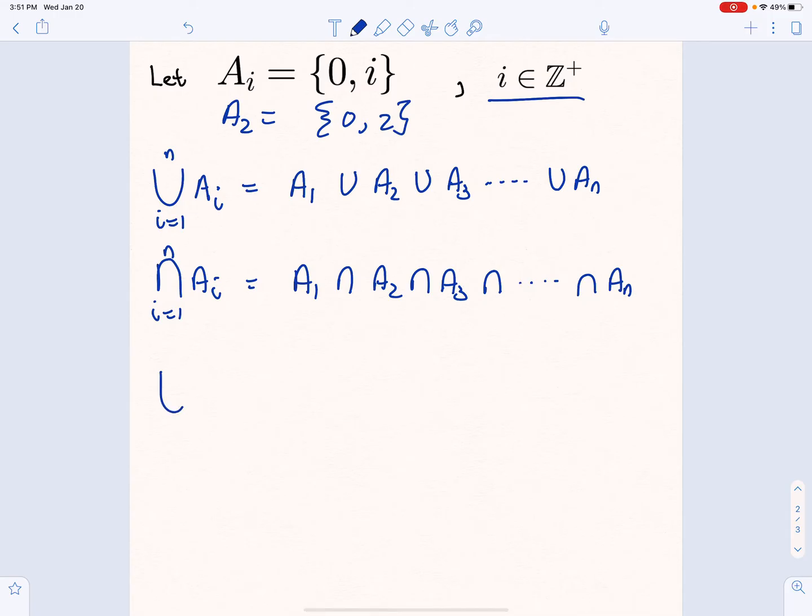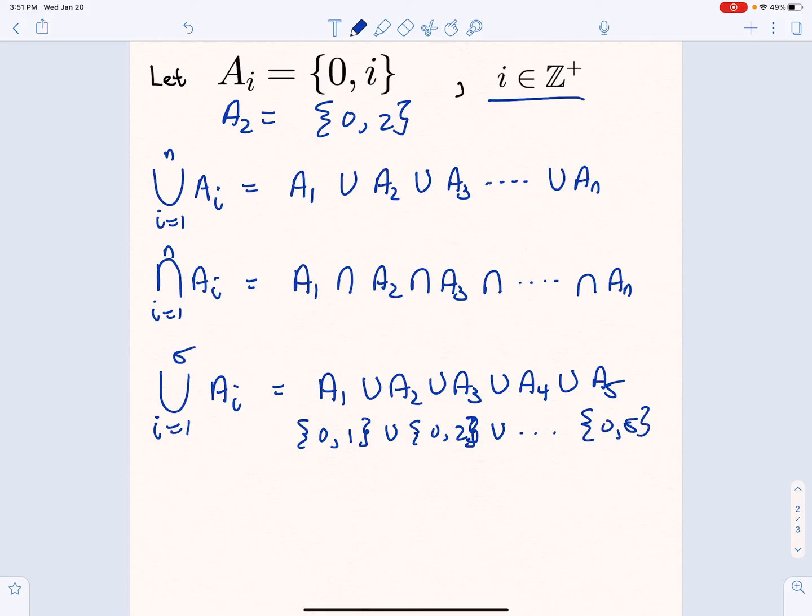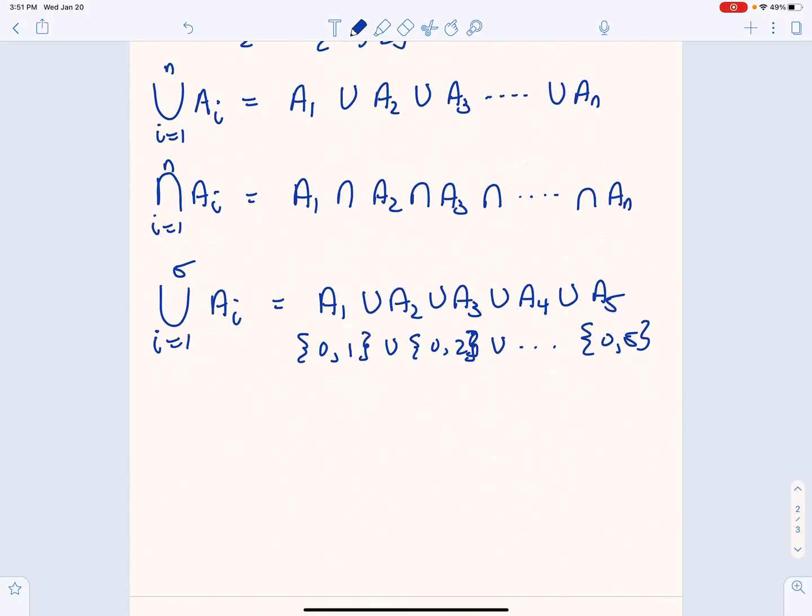Let's say we want the union, i going from 1 to 5 of Aᵢ in this case. Well, that means we're joining A₁, A₂, A₃, A₄, and A₅, which means we have the set {0, 1} union {0, 2} union all the way up to {0, 5}. Now, by looking at those and looking at the patterns, it's easy to see that the union of all of those is going to be the numbers 0 through 5.